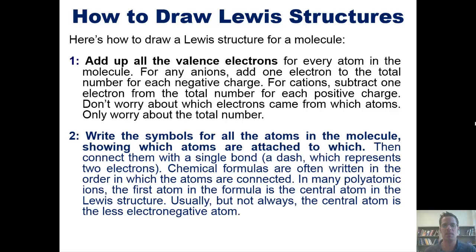Step two, write the symbols for all the atoms in the molecule showing which atoms are attached to which. Then connect them with a single bond, which is a dash, which represents two electrons. Chemical formulas are often written in the order in which the atoms are connected. In many polyatomic ions, the first atom in the formula is the central atom in the Lewis structure. Usually, but not always, the central atom is the less electronegative atom.